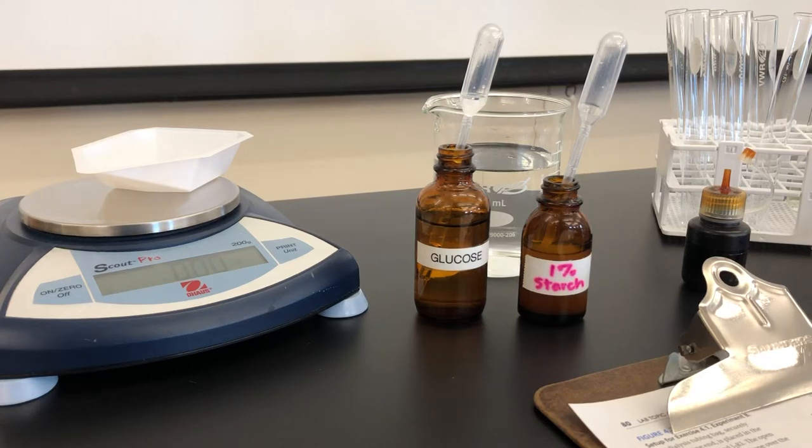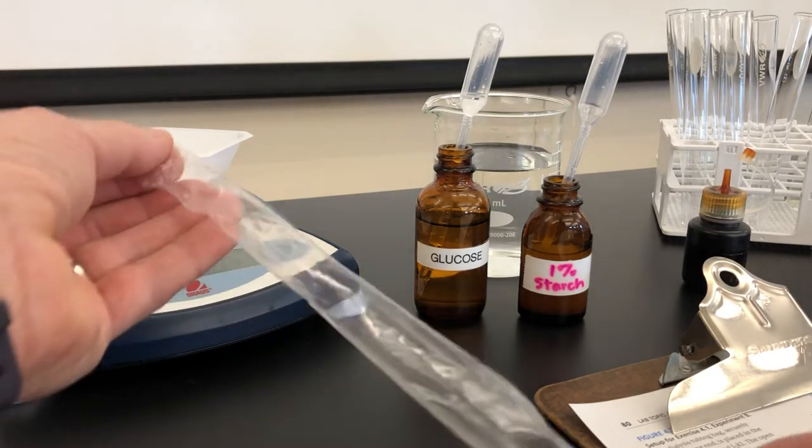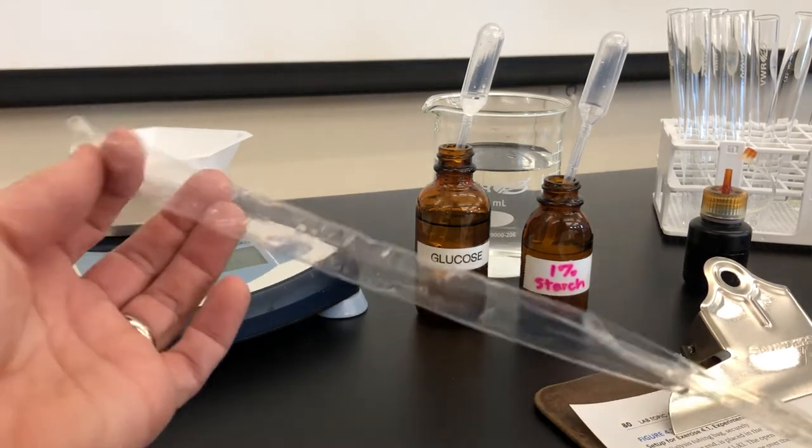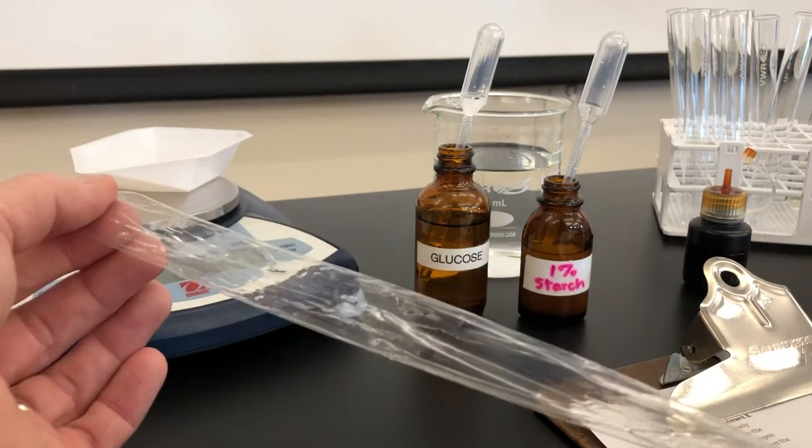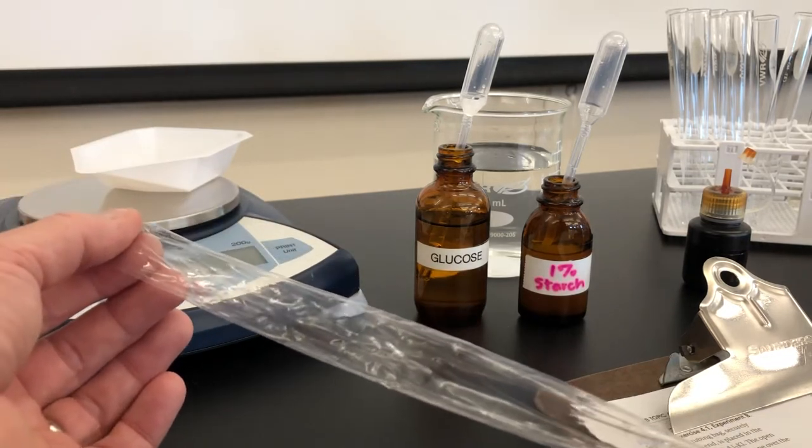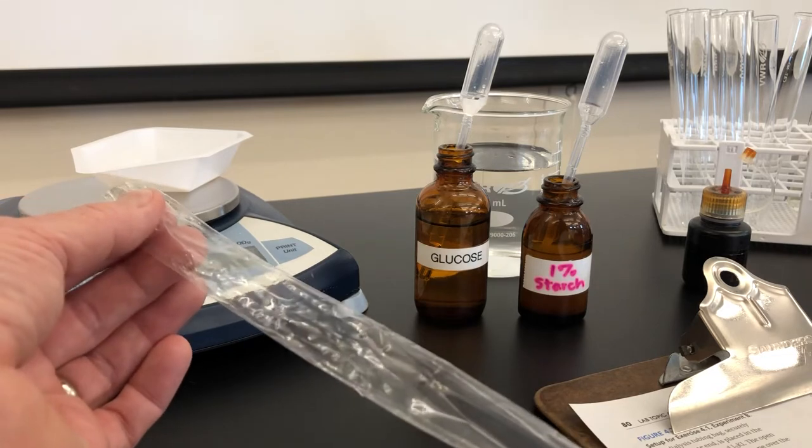This is the setup for experiment B exercise 4.1. In this activity we are going to use something called dialysis tubing. Dialysis tubing is a synthetic membrane that is used in dialysis machines for patients who have kidney failure.